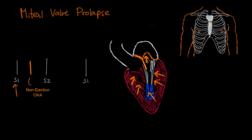This condition is also associated with mitral regurgitation. If this valve billows up, there are probably some problems closing — it may not close completely correctly, allowing blood to flow back. And if that's the case, after the click, you're going to have the murmur of mitral regurgitation.